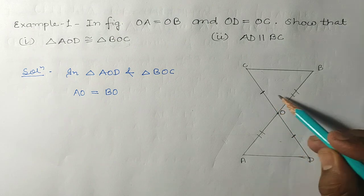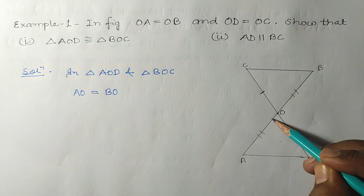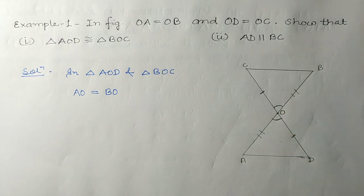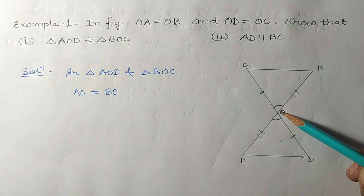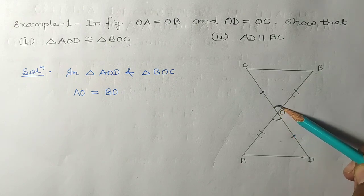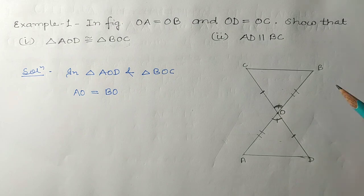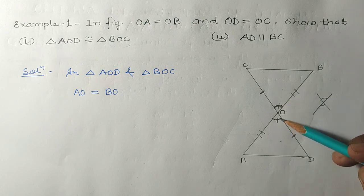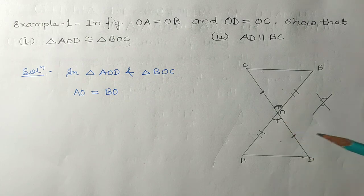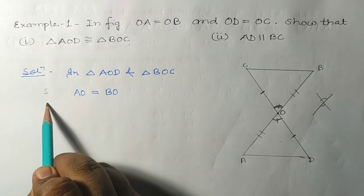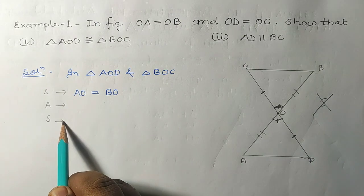In this triangle, these two sides are equal to the two sides of the other triangle. If we show the included angle is also equal, then by Side-Angle-Side we can prove the triangles are congruent. The included angle here would be angle AOD and angle BOC, which are equal by vertically opposite angles.